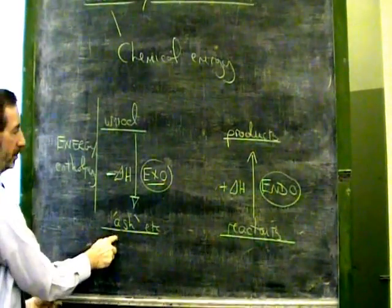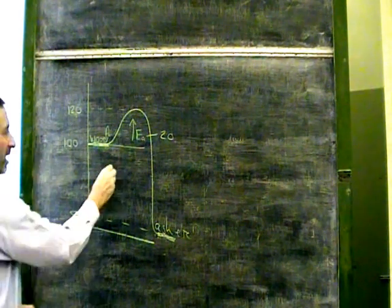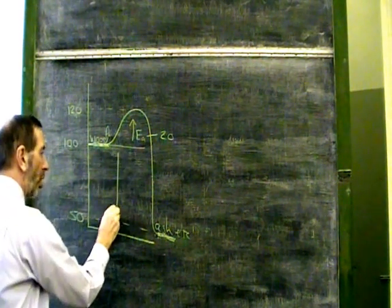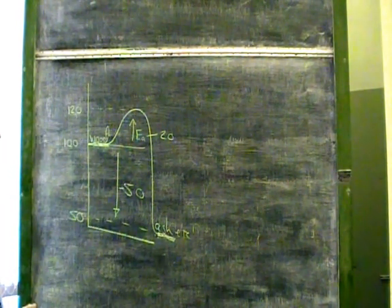Just as back here. So in this reaction, starting at 100 and ending at 50 means there's been a drop of 50 units. This would have an enthalpy change of minus 50, negative 50.